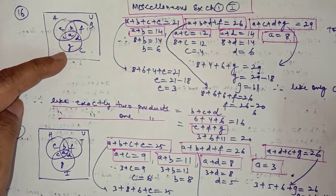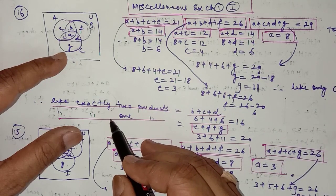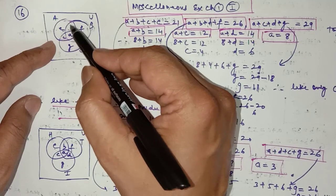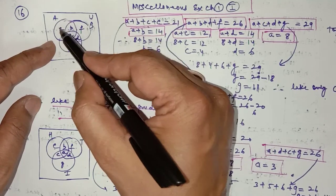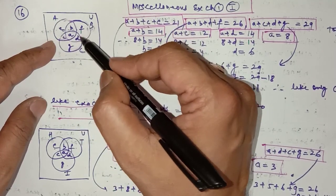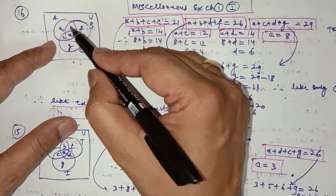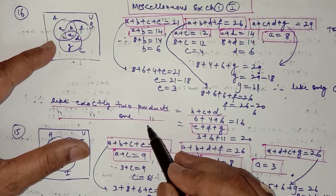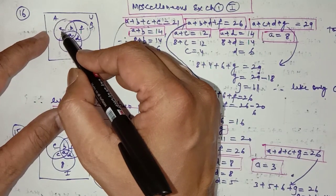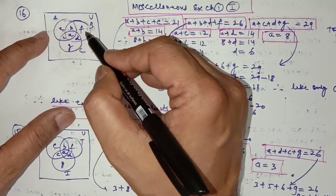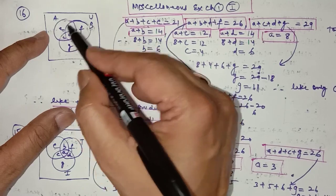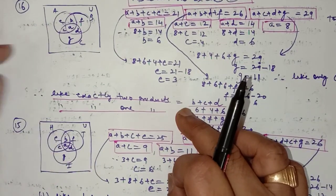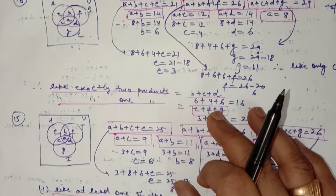Additionally, how many like exactly two products? That is b + c + d — where b represents exactly A and B, c represents exactly A and C, and d represents exactly B and C. Also, how many like exactly one product? That is e + f + g — where e is exactly A only, f is exactly B only, and g is exactly C only. These two additional parts were added to question 16.